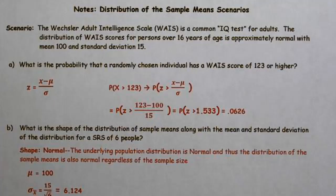We're going to continue to look at the distribution of sample means, and we're still going to continue to work with a normal distribution. Because the underlying distribution is normal, we'll be able to calculate the probabilities even if our sample size is 1, or basically if it's less than 30.